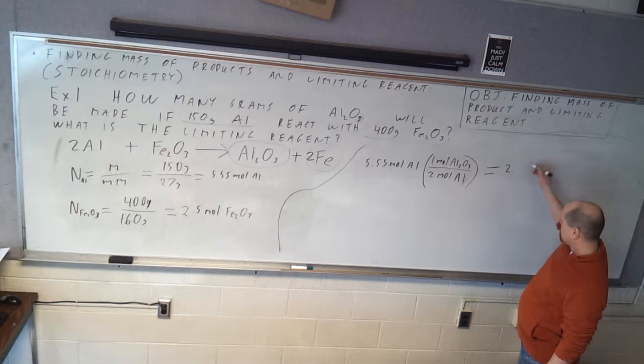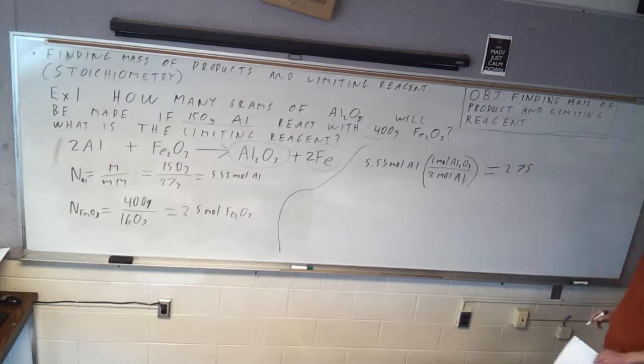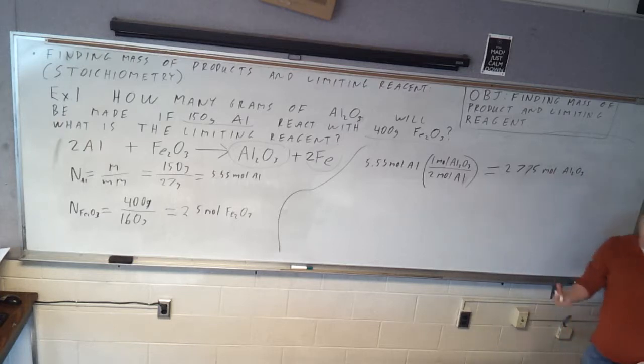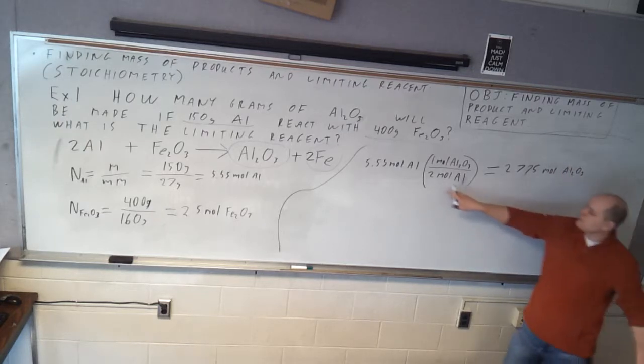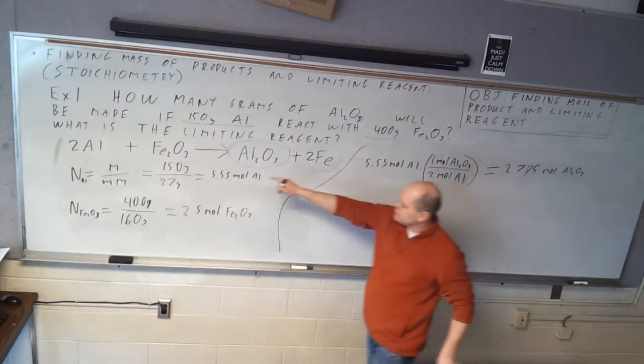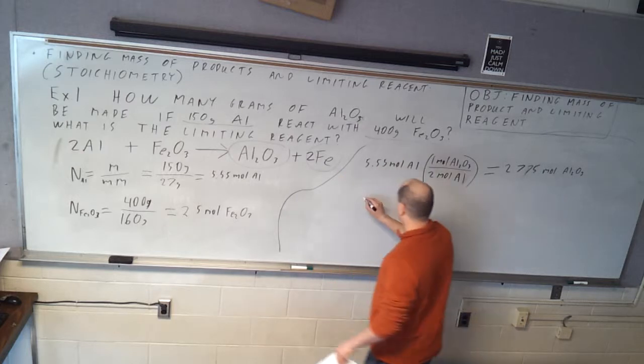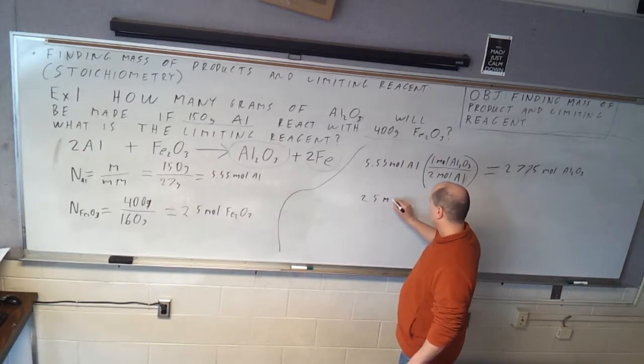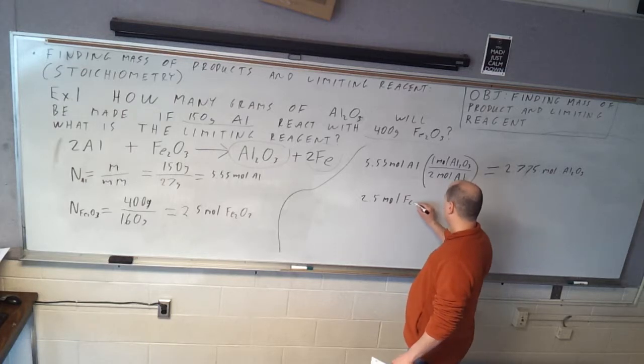So 5.55 divided by 2 is 2.775 moles of Al2O3. Remember, we're doing limiting reagent stuff. So this is how many moles of aluminum oxide we can make from how much aluminum we have. We still have to see how much we can make based on the amount of iron oxide we have.